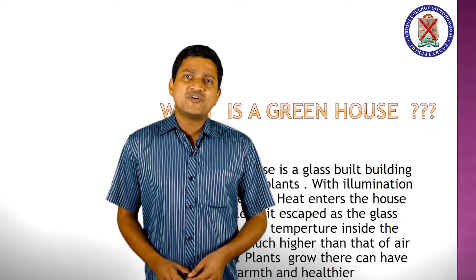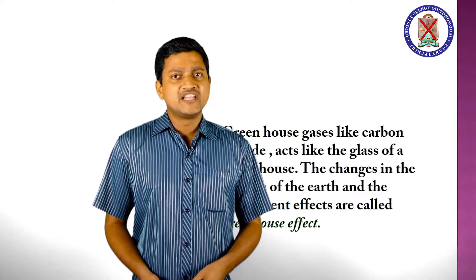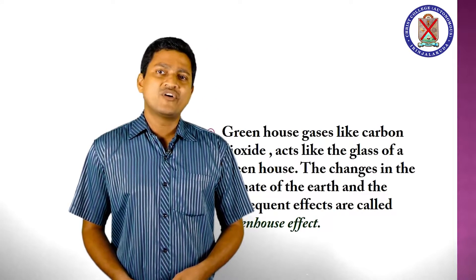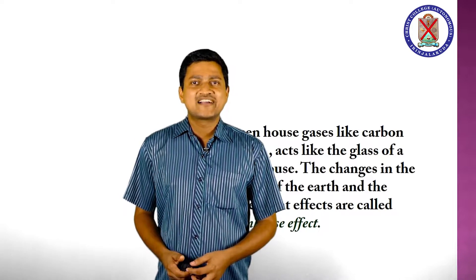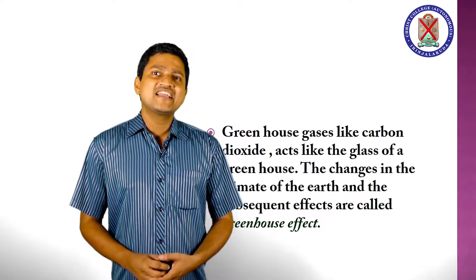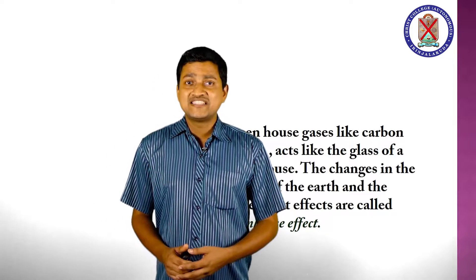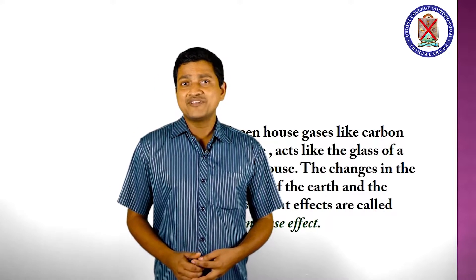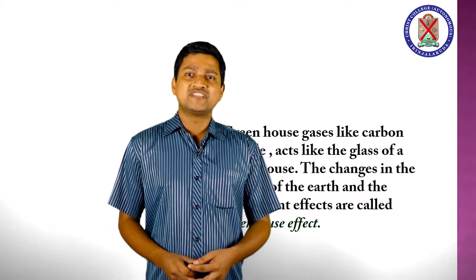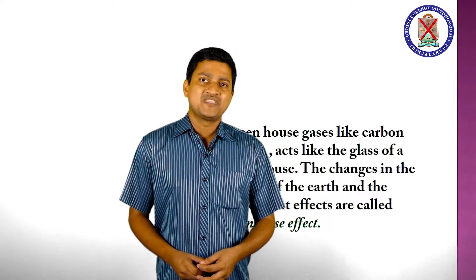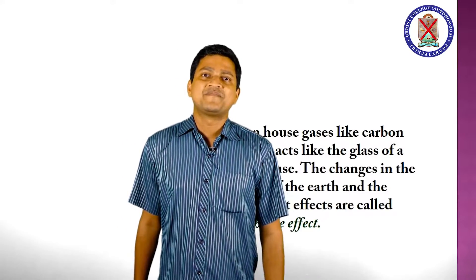Now we discuss about what the atmosphere is like — a huge greenhouse, and how it occurs. Greenhouse gases like carbon dioxide act like the glass of a greenhouse. The change in the climate of the earth and the subsequent effects are called the greenhouse effect. This phenomenon is otherwise known as the greenhouse effect.